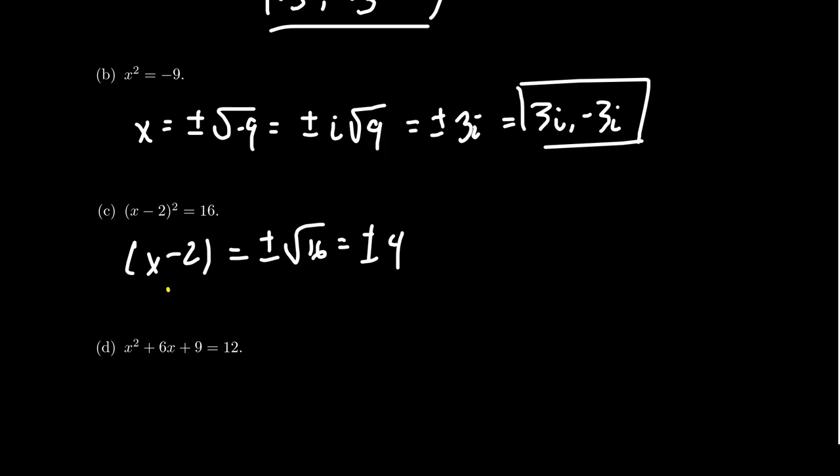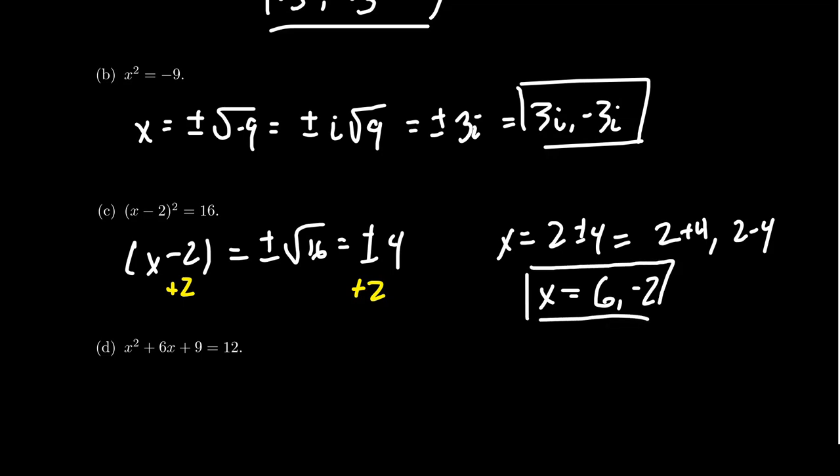And so then to solve for x, we just have to add two to both sides. And we get x equals two plus or minus four, which there's two different numbers here. There's going to be two plus four, and you're going to get two minus four. So we see that x equals six and negative two. Nothing too big about that. Not a big deal. Kind of like what happened when we did stuff with absolute value.